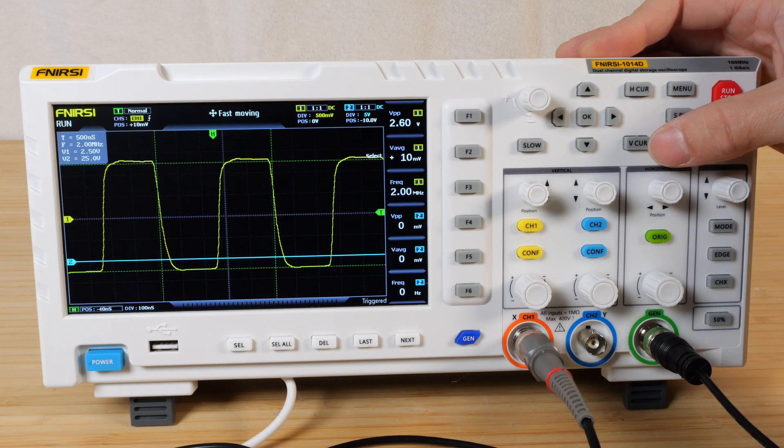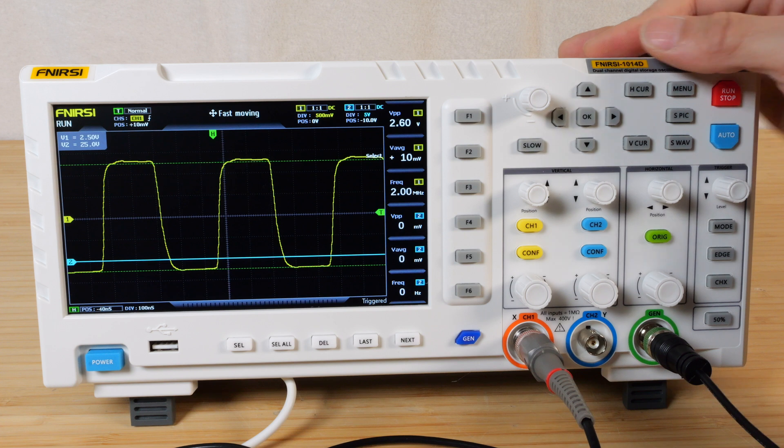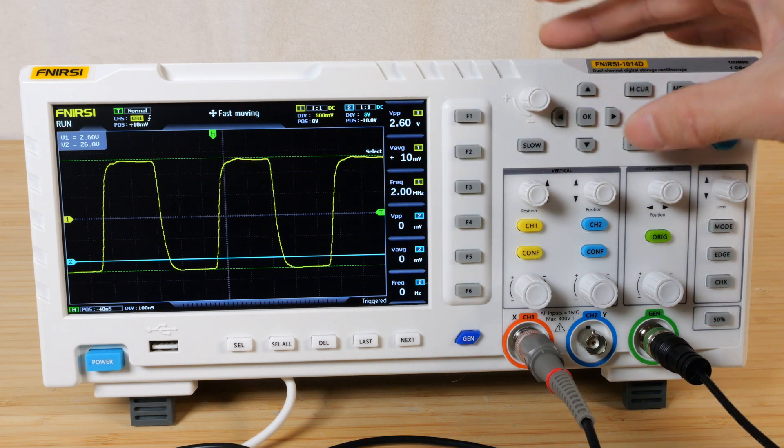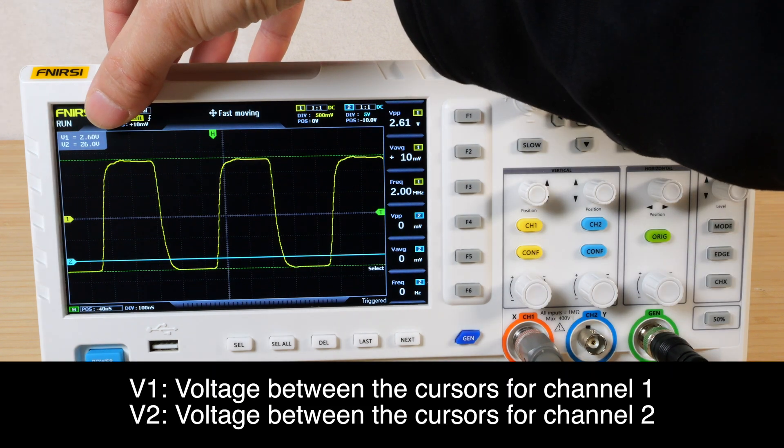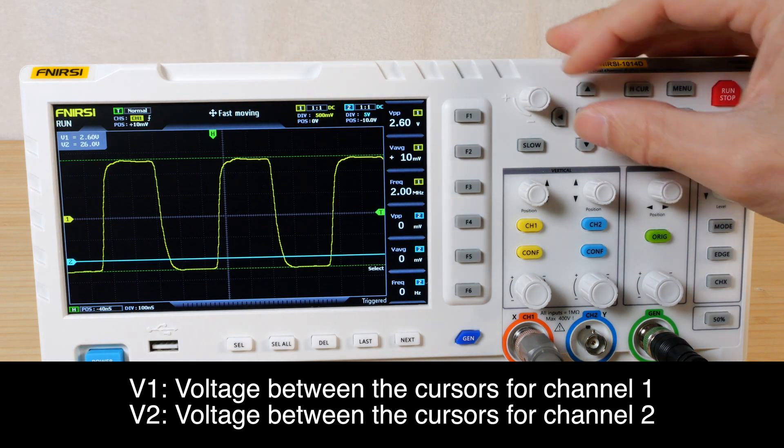If I want the vertical ones, turn off the horizontal. Again, I can measure this. V1 is 2.6 volts. V2 is 26 volts.